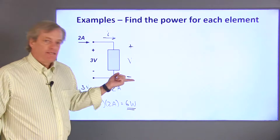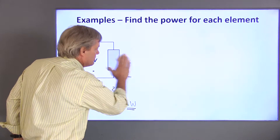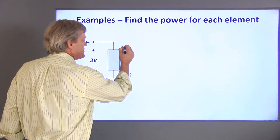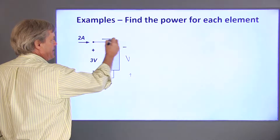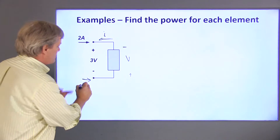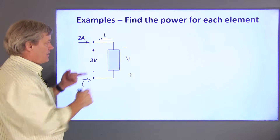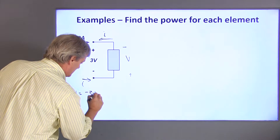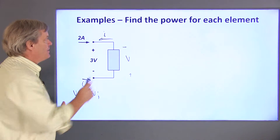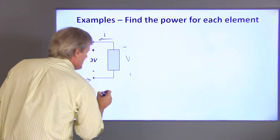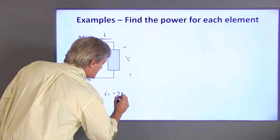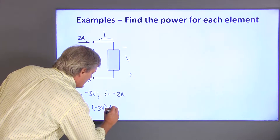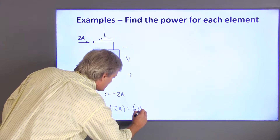My result here doesn't depend on what sign convention I use. If I assume that this is my positive voltage terminal, that means this will be the positive current direction since current has to enter the positive voltage terminal. This assumed polarity is the opposite of the actual polarity, so V has to change sign and V becomes negative 3 volts. This assumed current direction is also opposite of the actual direction, so I has to change signs as well — it's negative 2 amps. So power is negative 3 volts times negative 2 amps, and it's still positive 6 watts.